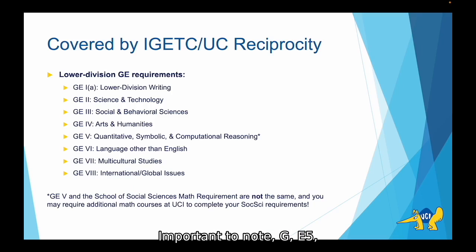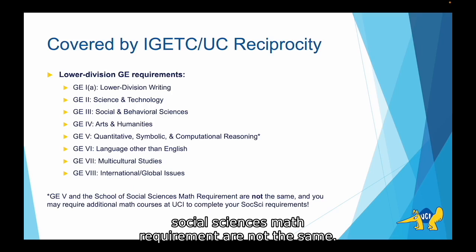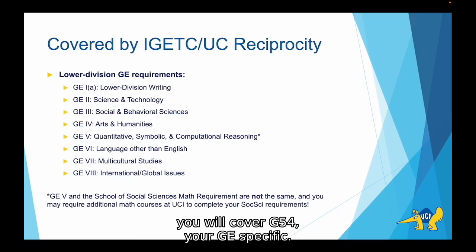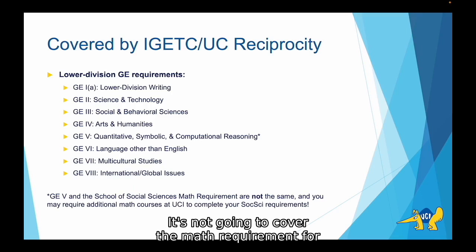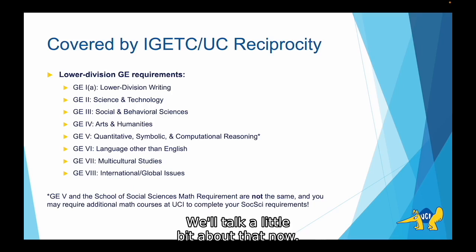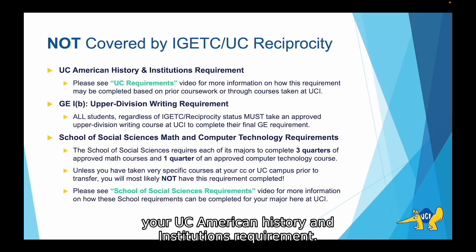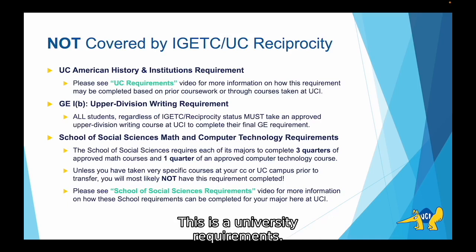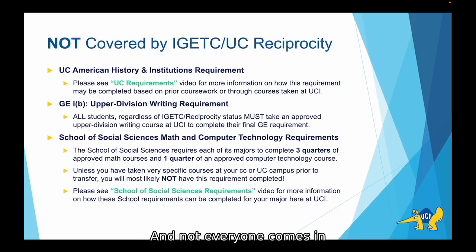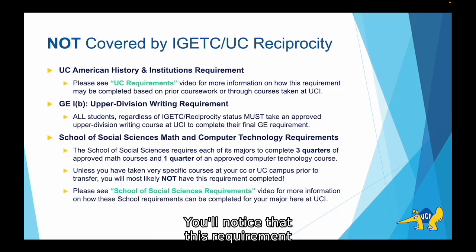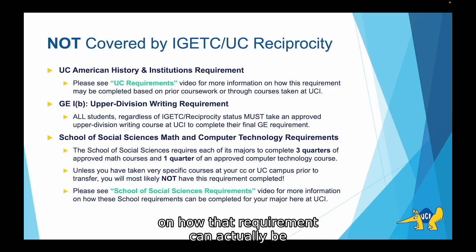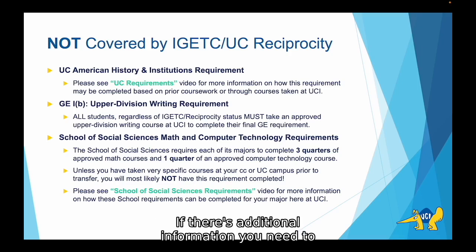Important to note: GE5 and the School of Social Sciences math requirement are not the same. While your IGETC will cover GE5 for your GE specifically, it's not going to cover the math requirement for Social Sciences because the classes are not generally the same. Now, here are the things that are not actually covered by your IGETC or UC Reciprocity. The first is your UC American History and Institutions requirement — this is a university requirement and not everyone comes in with it cleared, especially transfer students, so you'll often find this requirement outstanding. Please check out our UC requirements video for more information on how that requirement can be completed based on your prior coursework.